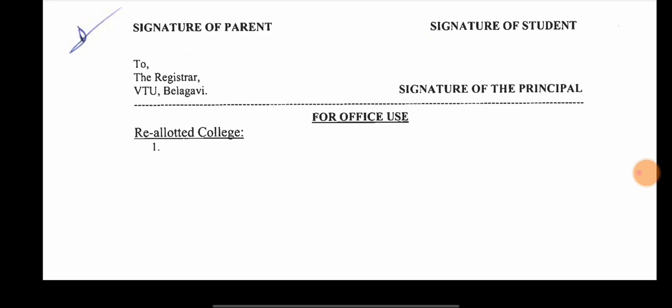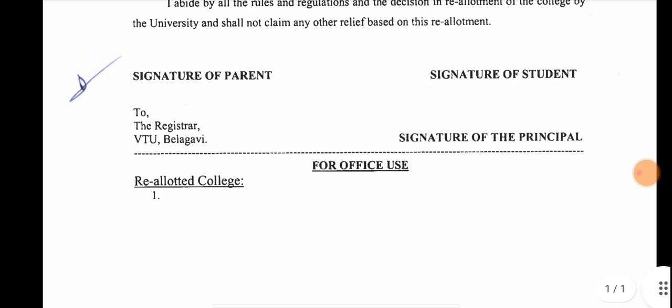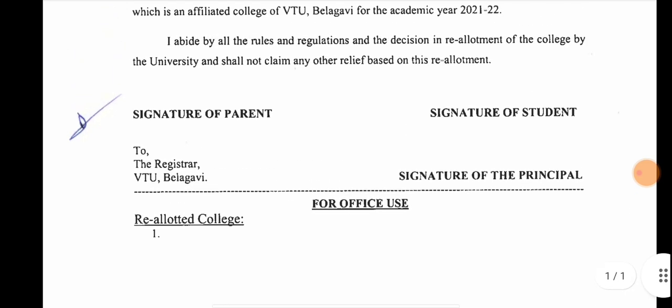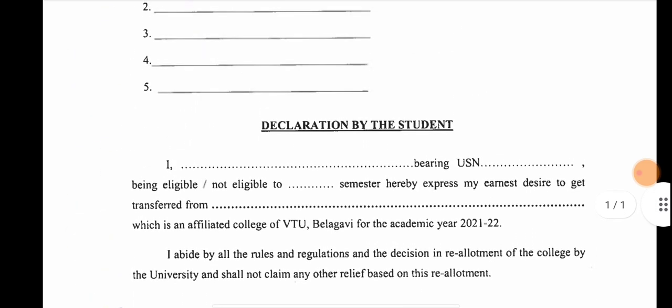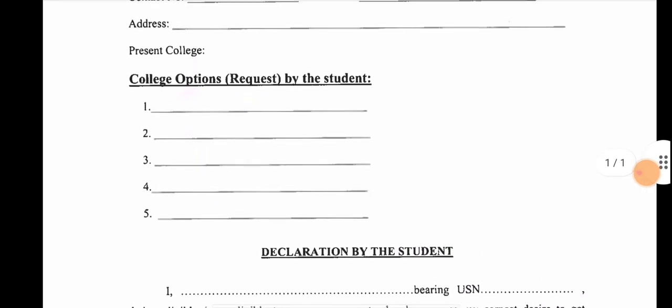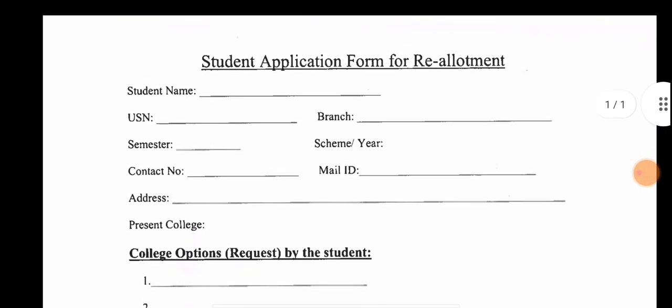If you want to receive your parents' or your own name, you can also contact your principal. If you want to receive the donor form, please check out the VT option form. If you have any questions, please check out all the questions. Thank you for watching.